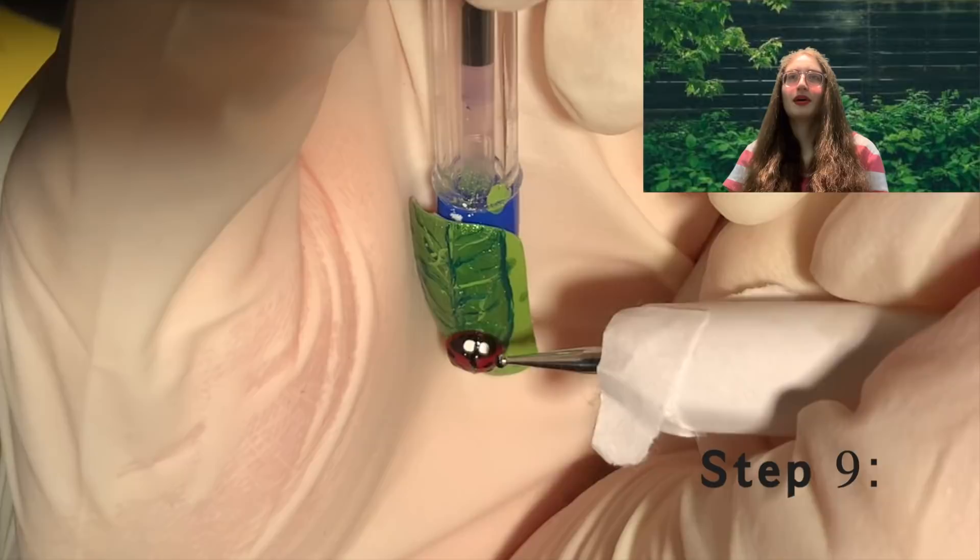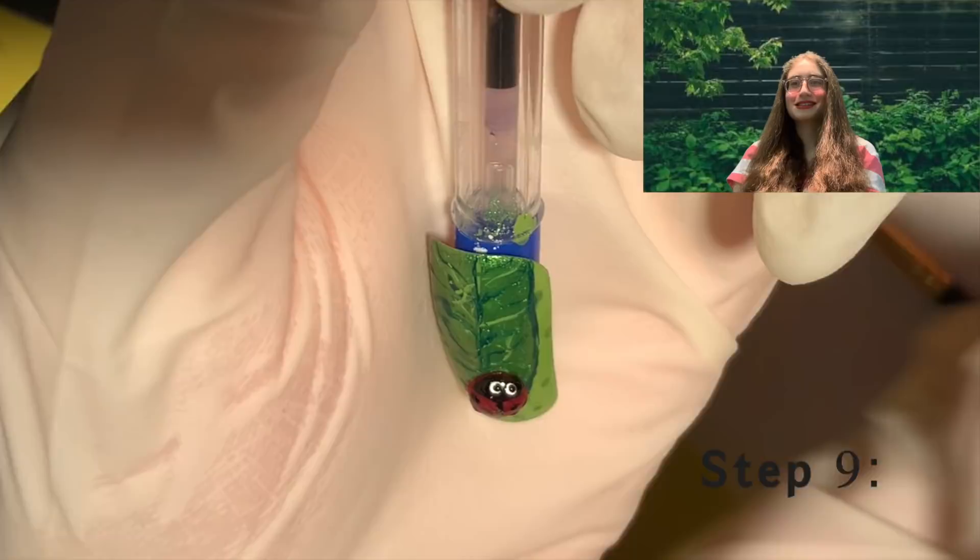This is optional, but also with white nail polish, you can add two eyes with a tiny dotting tool and then put black on top for the pupils.